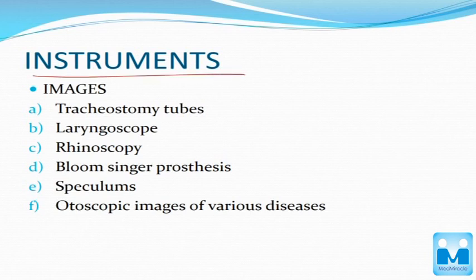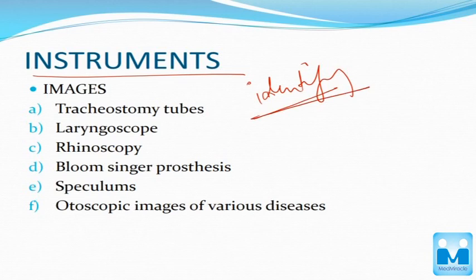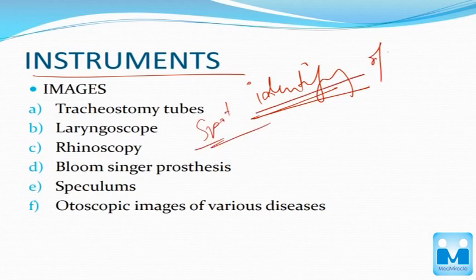Coming to the instruments part — basic ENT instruments. You don't have to study each and every instrument in detail; you just have to be able to identify them and know which instrument is used in which surgery. By the descriptive features alone you will be able to guess. Spot identification of instruments would be sufficient.